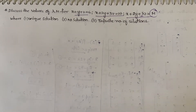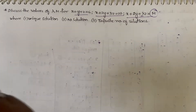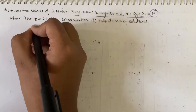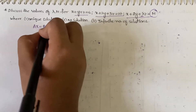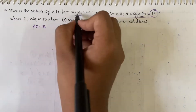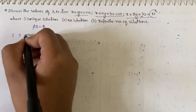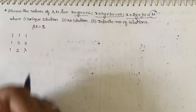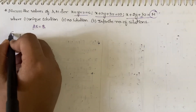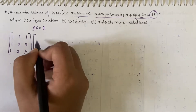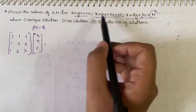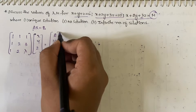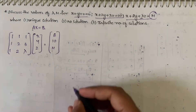First we have to do the echelon form, and for that we write the augmented matrix. To get the augmented matrix, we write it in the Ax = b form. A is the coefficient matrix: [1 1 1 / 1 2 3 / 1 2 λ], x is the variable matrix [x y z], and b is the constant matrix [6, 10, μ].